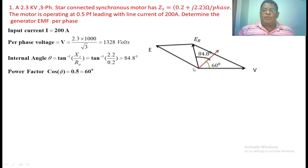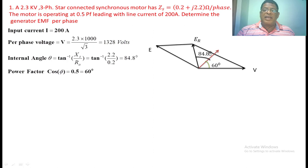The angle between E, R, and I is 84.8 degrees — that is theta, the internal angle. The power factor angle is given as 60 degrees. Now we have to find out the length of this vector, which is equal to E — the generated voltage, back EMF, or counter voltage in a synchronous motor.